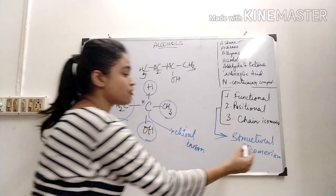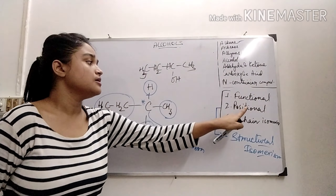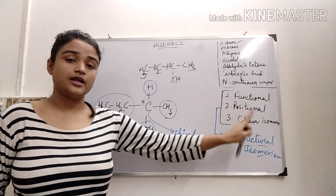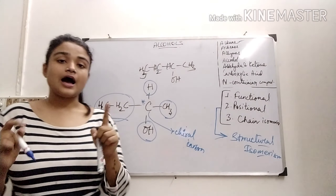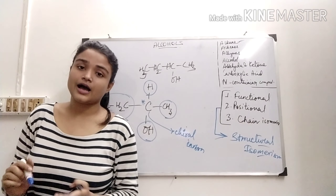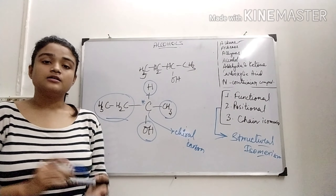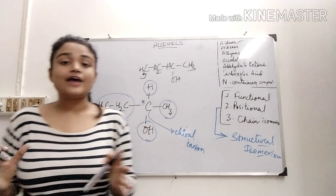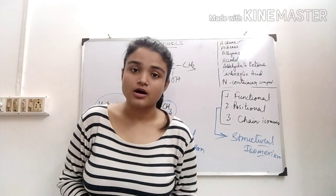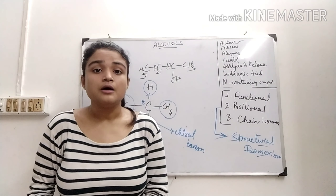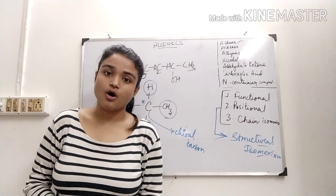So this is how an alcohol can also exhibit optical isomerism. To summarize, alcohol can exhibit structural isomerism — positional, functional, chain — and optical isomerism, which is a stereo isomer. These are the isomerisms of alcohols. Now we will move on to the preparations of alcohol.